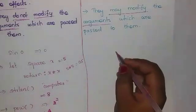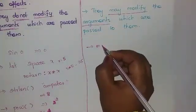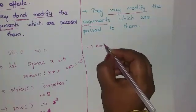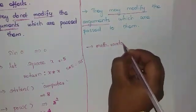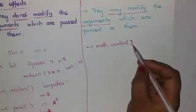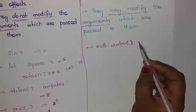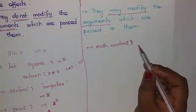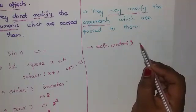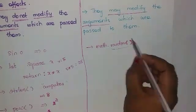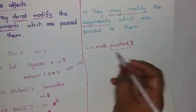Now let us look at impure functions. Take Math.random() as an example — no argument is given in the function call, yet each call produces a different output. So this random function is not pure; it is an impure function.